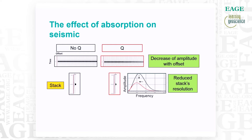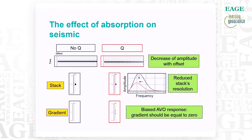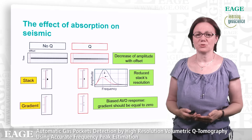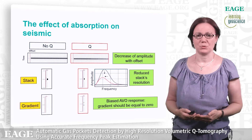Moreover, we get a gradient different from zero even if the decrease in amplitude with offset is related to the absorption and not to a real AVU response. Then we get a biased AVU if we don't correct for Q.